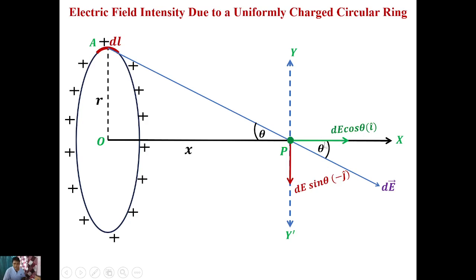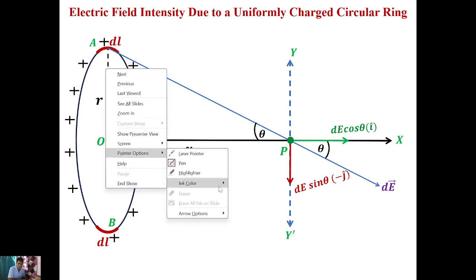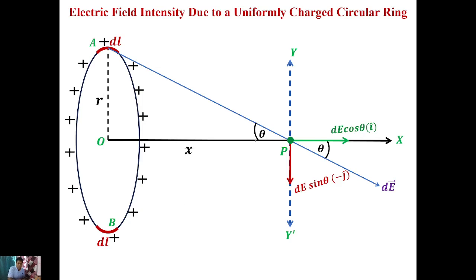Along the horizontal component this is your DE cos θ magnitude, and along vertical this will be DE sin θ magnitude. Now another element is considered at point B, exactly diametrically opposite to point A. Due to this DL at point B, the electric field at P will be along the direction BP.